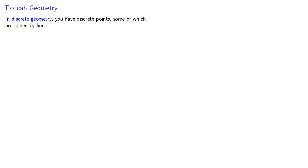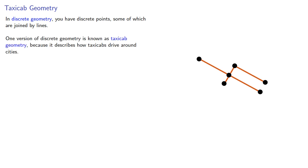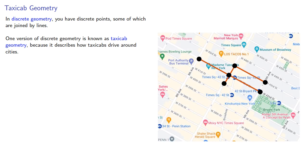In discrete geometry, you have discrete points, some of which are joined by lines. One version of discrete geometry is known as taxicab geometry because it describes how taxicabs drive around cities. In particular, we can imagine the lines as being streets and the points as intersections, and the taxicabs have to drive along the streets, in theory.